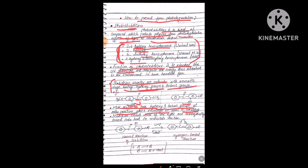Most stabilizers have hydroxy and ketonic groups at the ortho position, which encourages hydrogen bond formation. The stabilizer absorbs most of the light and subsequently converts it into heat in a reversible reaction, so the polymer is prevented from photo-degradation. This is the normal structure of the stabilizer: the OH hydroxy part, the ketonic part, and the aromatic ring. When UV light attacks the photo-stabilizer, hydrogen bonding takes place and this converts to a hydrogen-bonded structure.